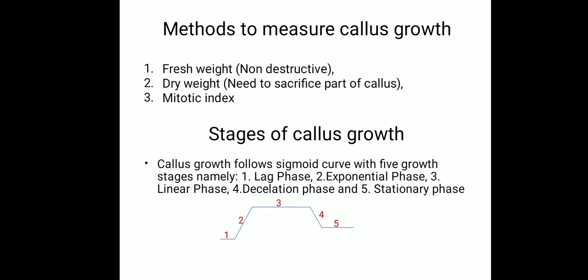Callus growth generally follows a sigmoid curve and five different stages are reported: lag phase, log exponential phase, linear phase, deceleration phase, and stationary phase. During the deceleration phase, the callus can lose some cells to death, and finally reaches a stationary or very slow growth phase. Stage three — the linear phase — is ideal for performing experiments or subculturing, so the end of stage two and beginning of stage three is ideal for processing the callus.